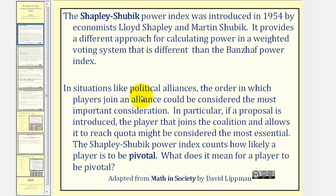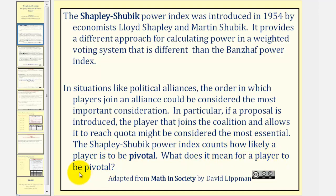In situations like political alliances, the order in which players join an alliance could be considered the most important consideration. In particular, if a proposal is introduced, the player that joins the coalition and allows it to reach quota might be considered the most essential. The Shapley-Shubik Power Index counts how likely a player is to be pivotal. But what does it mean for a player to be pivotal?